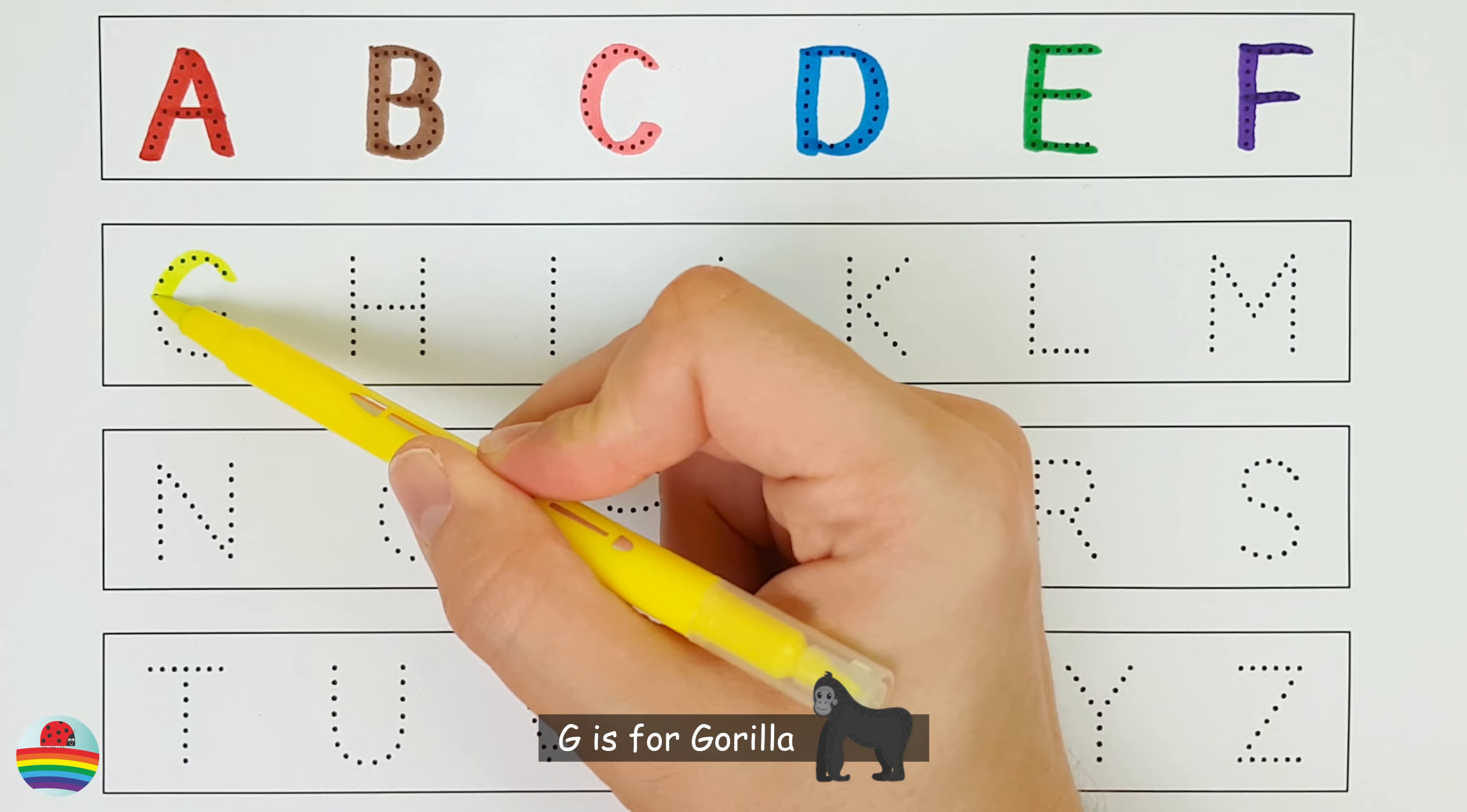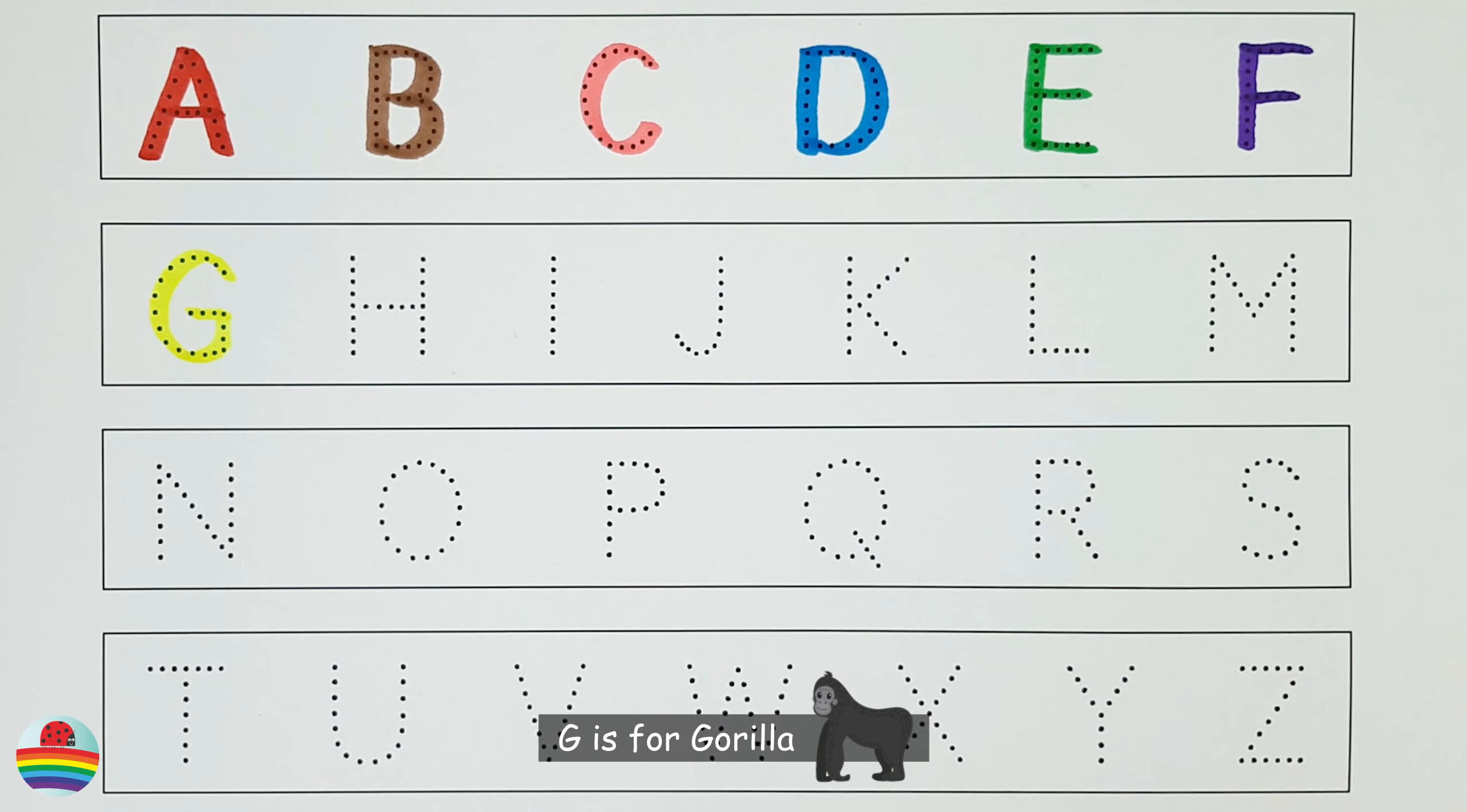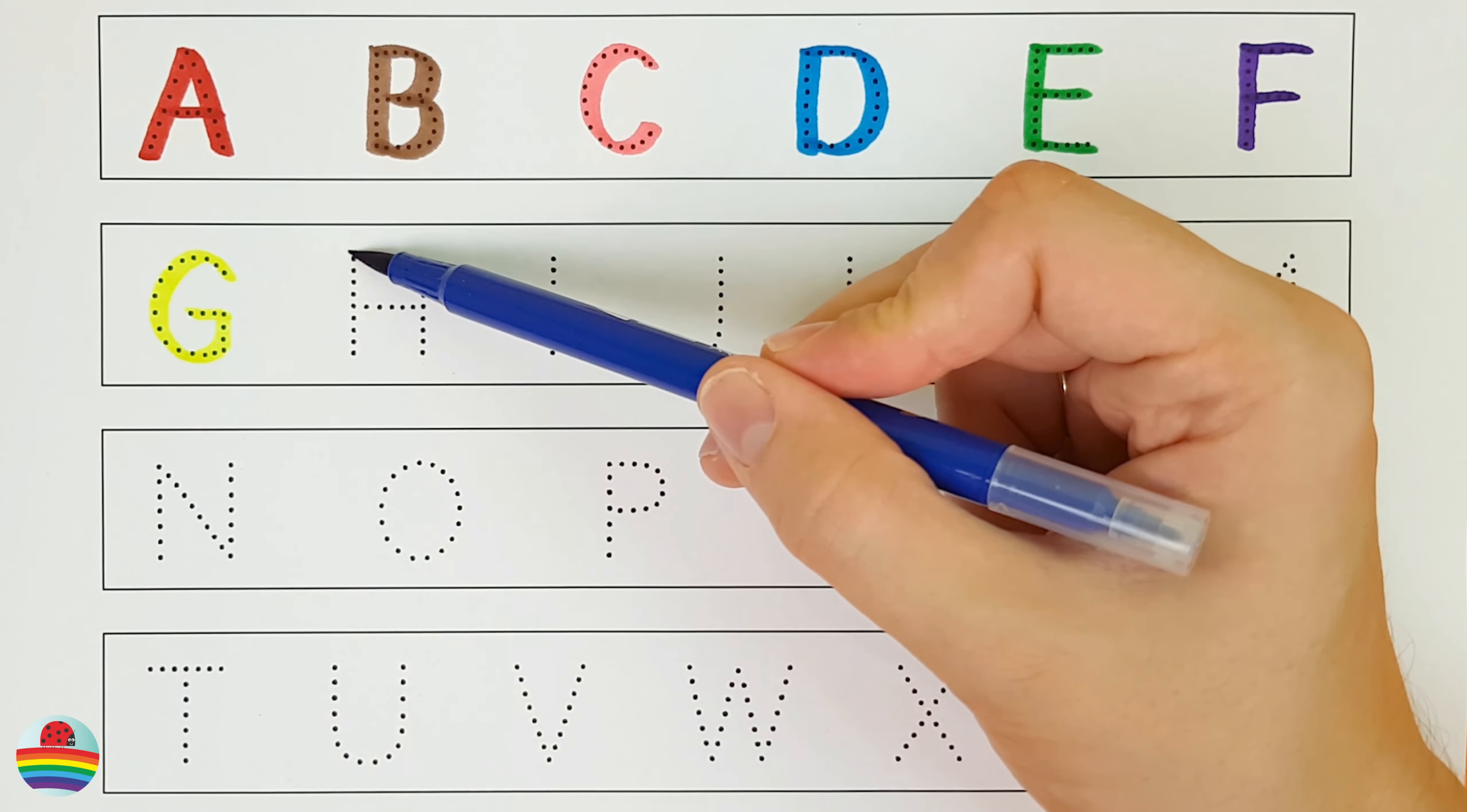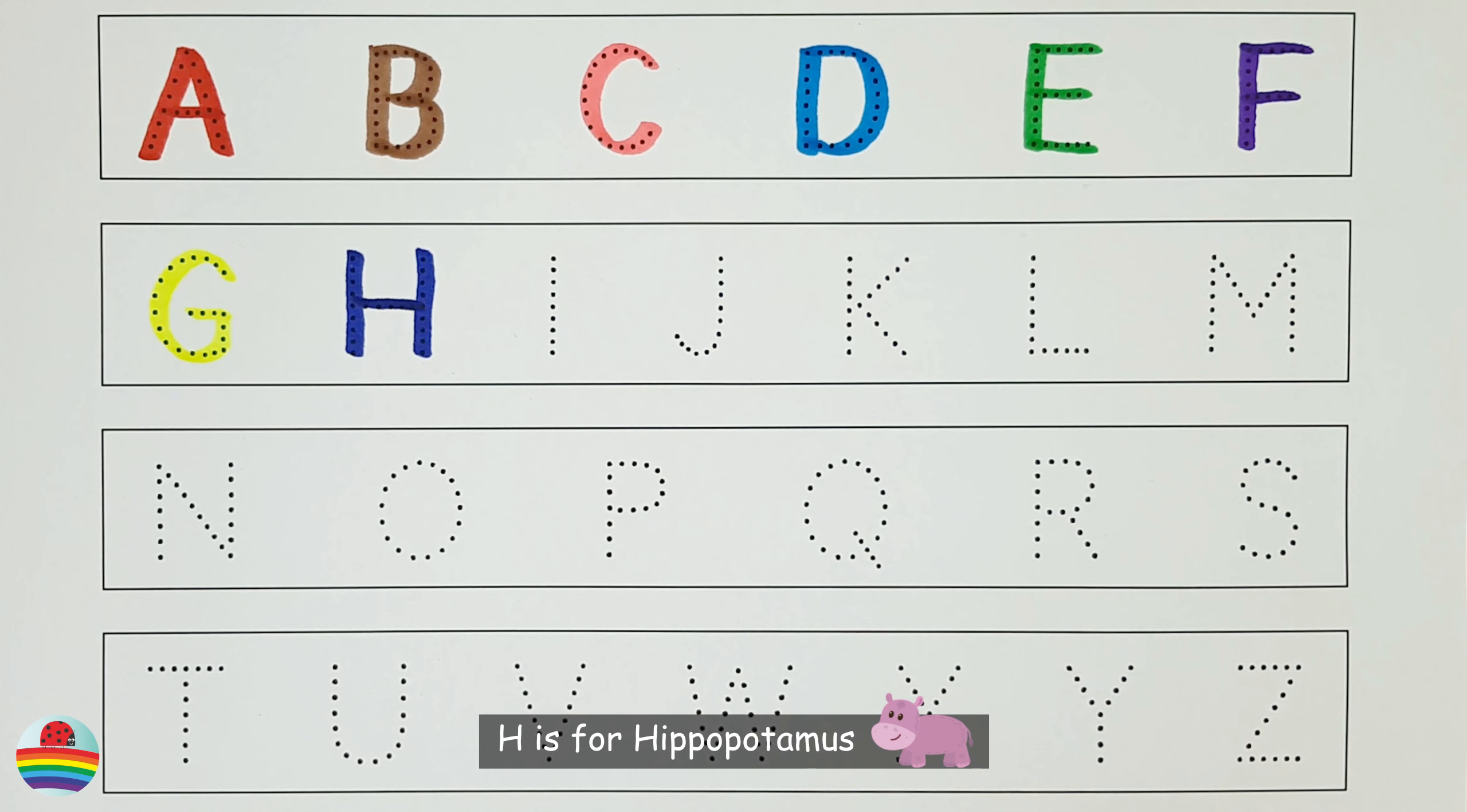G. G is for Gorilla. G. H. H is for Hippopotamus. H.